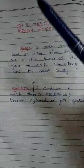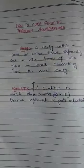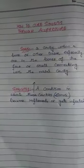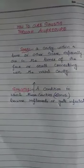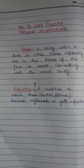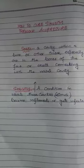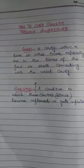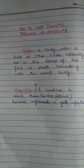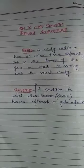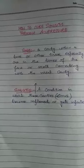You can do acupressure for sinusitis symptoms on yourself — it only takes a few minutes. Use a mirror to help you find the points on your face. You can press on the acupressure points or gently rub or rotate your fingers in a circular motion over the area. Here are the main acupressure points for sinusitis relief and how to find them.